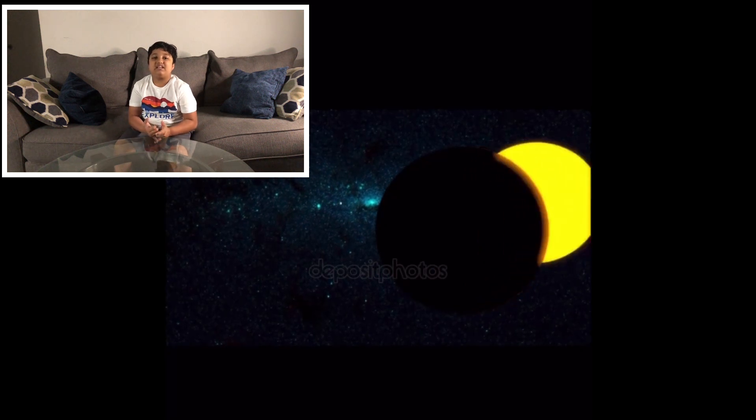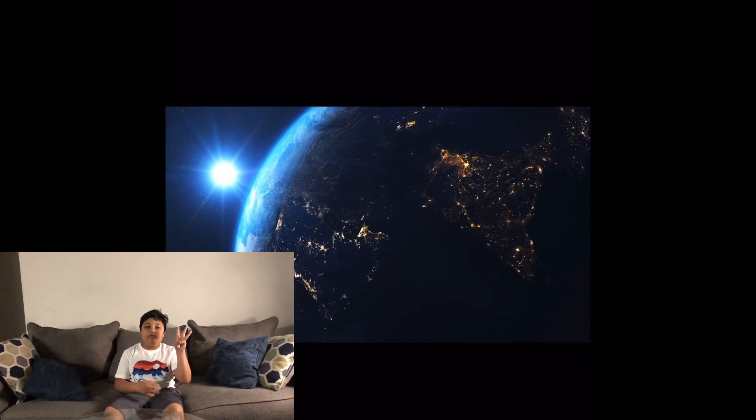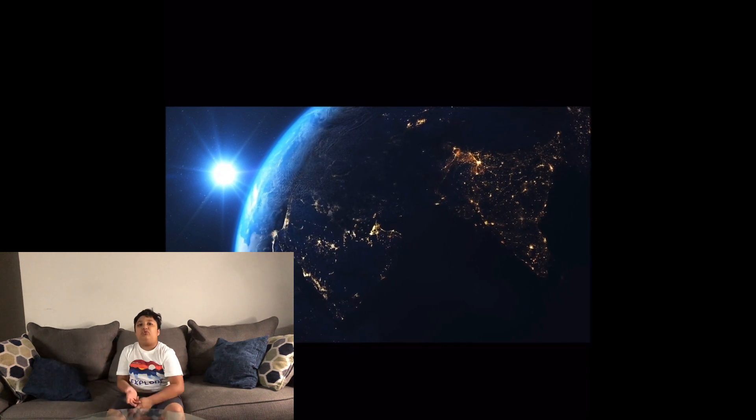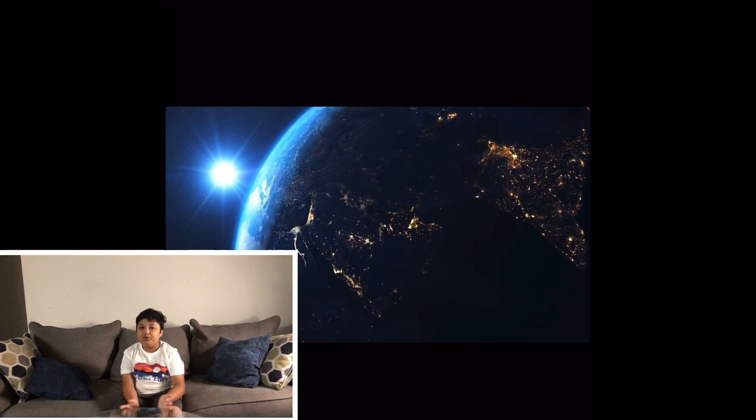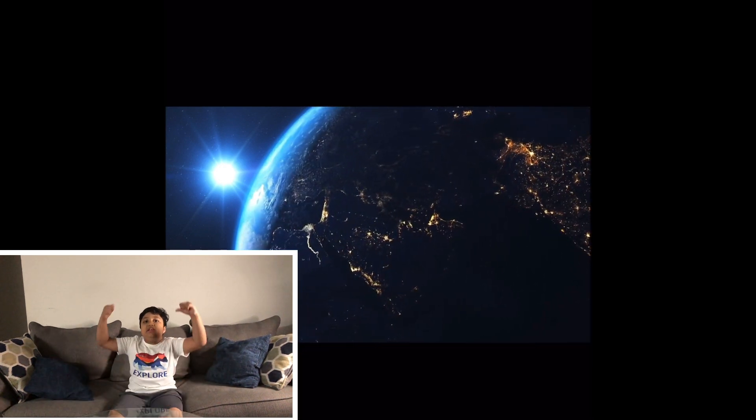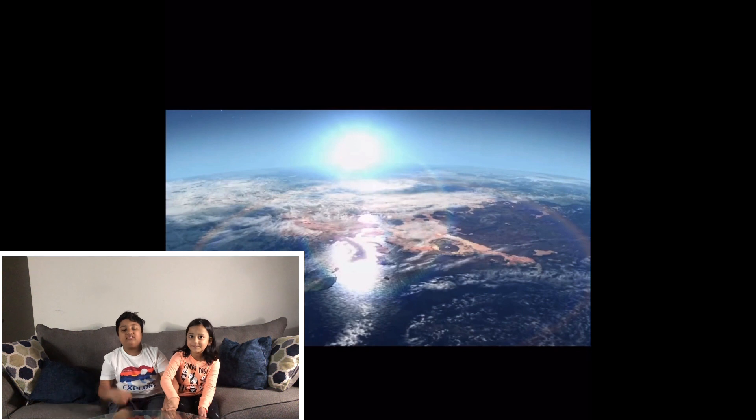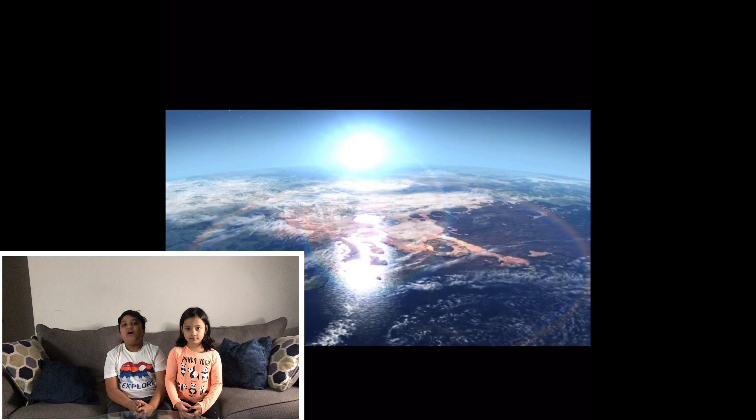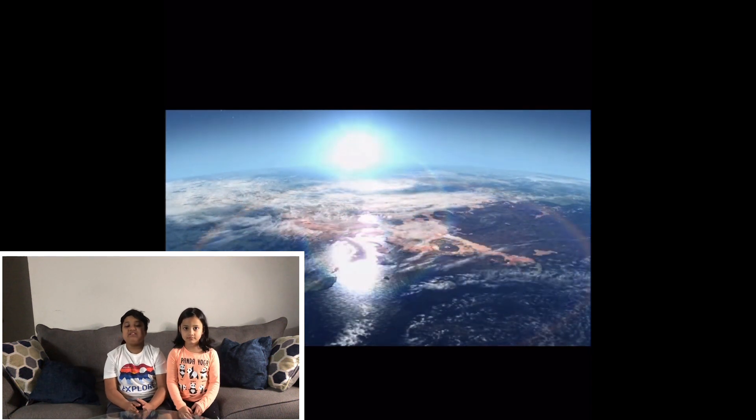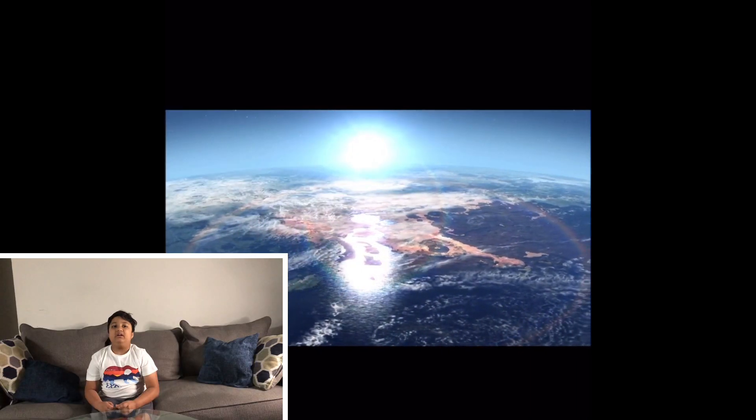After Venus comes Earth. Earth is the third planet from our solar system. Of course you know about Earth because we learn about Earth each day. Earth is not too cold, just right, and not too hot. This is the Goldilocks zone. We live in the Goldilocks zone. Earth is the only planet that has living things.